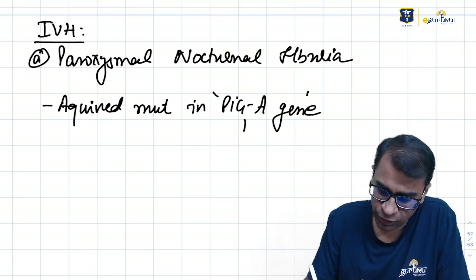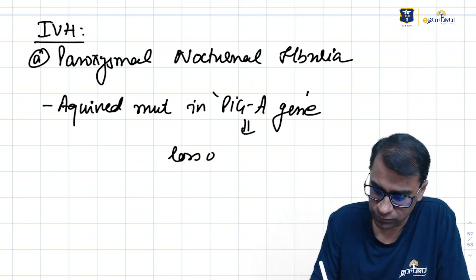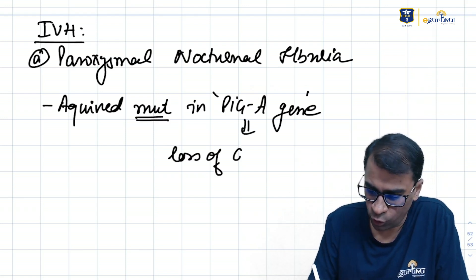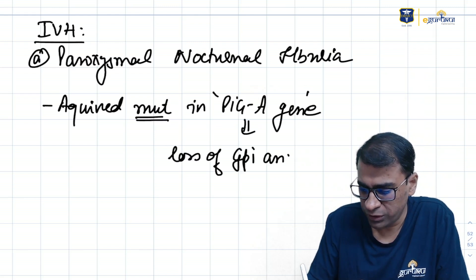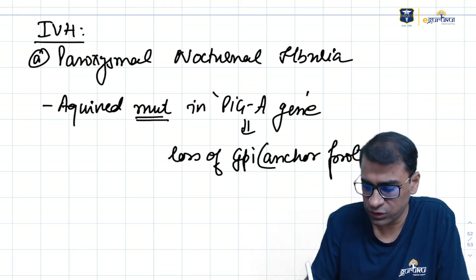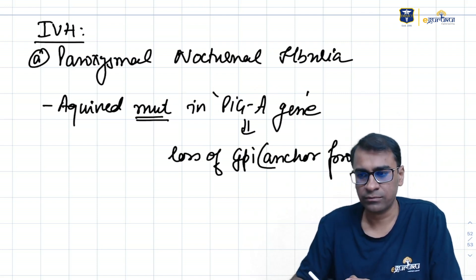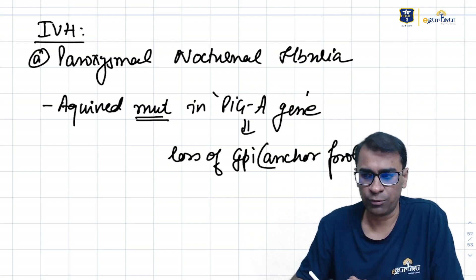The PIG-A gene, because of mutation, causes loss of GPI, which is an anchor protein. GPI is an anchor protein.